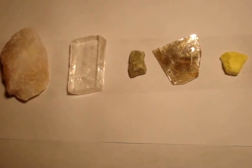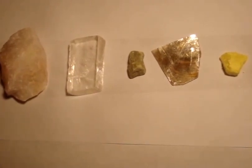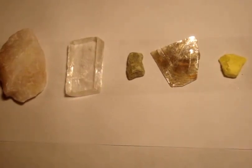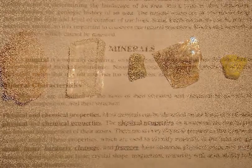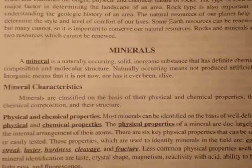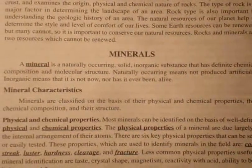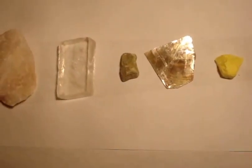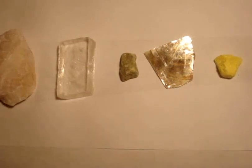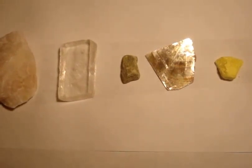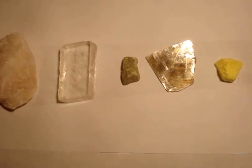Here in front of us we have several types of minerals. They all appear in different shapes, sizes, and colors. It's our job to try to identify these minerals. A mineral is a naturally occurring solid inorganic substance that has a definite chemical composition and molecular structure. Minerals are defined by their physical or atomic structure and their chemical composition, but how do we go about identifying minerals? We have to look at certain physical features to help us.